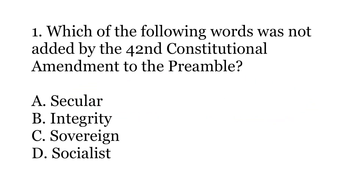First question is: which of the following words was not added by the 42nd constitutional amendment to the preamble? The options are A. Secular, B. Integrity, C. Sovereign, or D. Socialist.